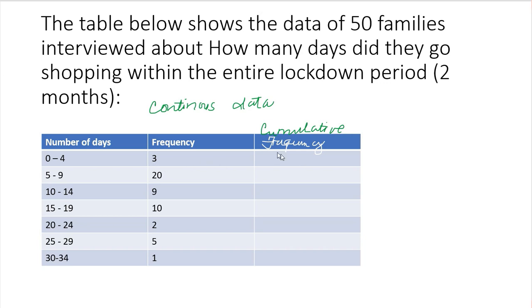So start with the first frequency. We have 3, 3 plus 20 is 23, 23 plus 9 is 32, 32 plus 10 is 42, 42 plus 2 is 44, 44 plus 5 is 49, and 49 plus 1 is 50. So we landed at our N or the number of data. Now we have to check what is the meaning of this. Actually this class interval here, you can use an inequality symbol to make it easier for you.